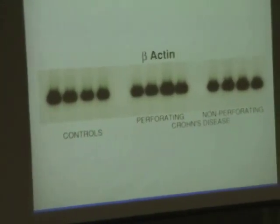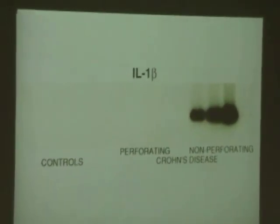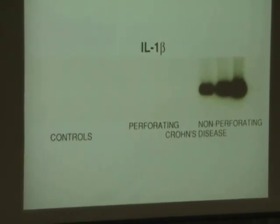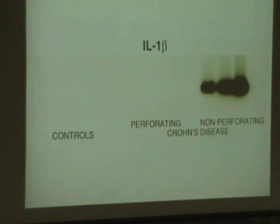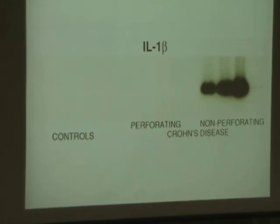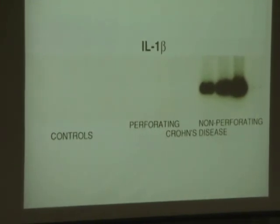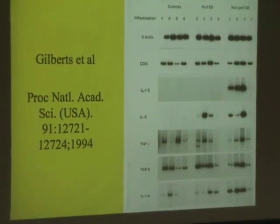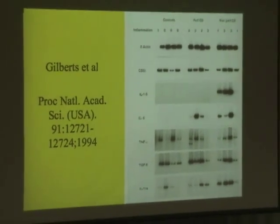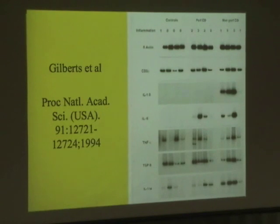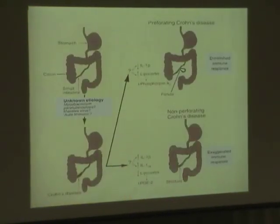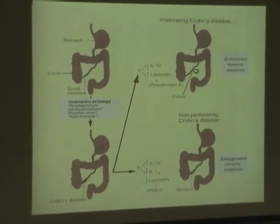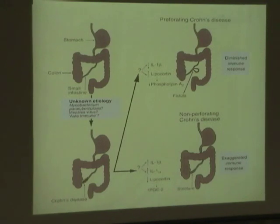I'm only showing you one of the results. The non-perforating form, the obstructive form of Crohn's disease — the more indolent form — just like with tuberculoid leprosy, has a pro-inflammatory cytokine response. This is the montage we published with all of the appropriate controls, showing, for example, interleukin-6 is also upregulated in Crohn's. We concluded there was an enhanced immune response in the obstructive form and a decreased immune response in the fistulizing form.